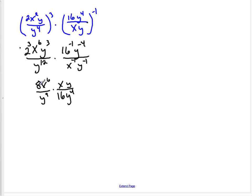So now if I simplify, if I multiply the top here, I'll get 8. This will be x to the 6th times x, which is x to the 7th, times y. And down here I'll have y to the 9th times y to the 4th, which is y to the 13th, and I'll have 16.